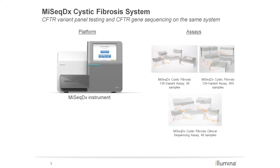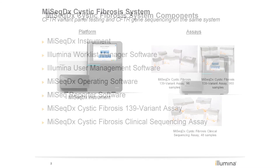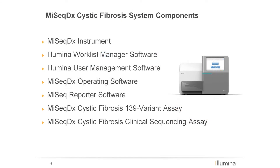Giving you peace of mind that the right data is produced the first time. The MiSeq DX Cystic Fibrosis System is the only platform on the market that allows users to perform both CFTR variant panel testing and CFTR gene sequencing on the same instrument, offering a complete solution for molecular CF testing. The key components of this IVD system are the MiSeq DX instrument, which has been optimized for the clinical market through enhanced software and additional process controls.